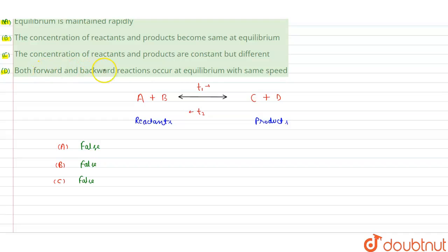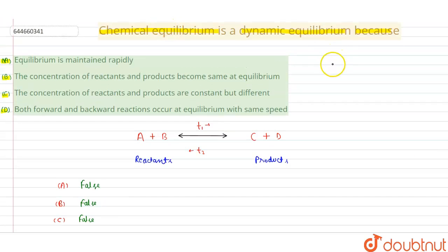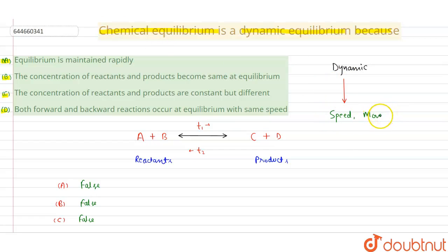Option D says: both forward and backward reactions occur at equilibrium with the same speed. This is the correct option. The word 'dynamic' is related to speed and movement. At equilibrium, the speed of the forward reaction v1 equals the speed of the backward reaction v2, so v1 = v2. Therefore, option D is the correct answer.